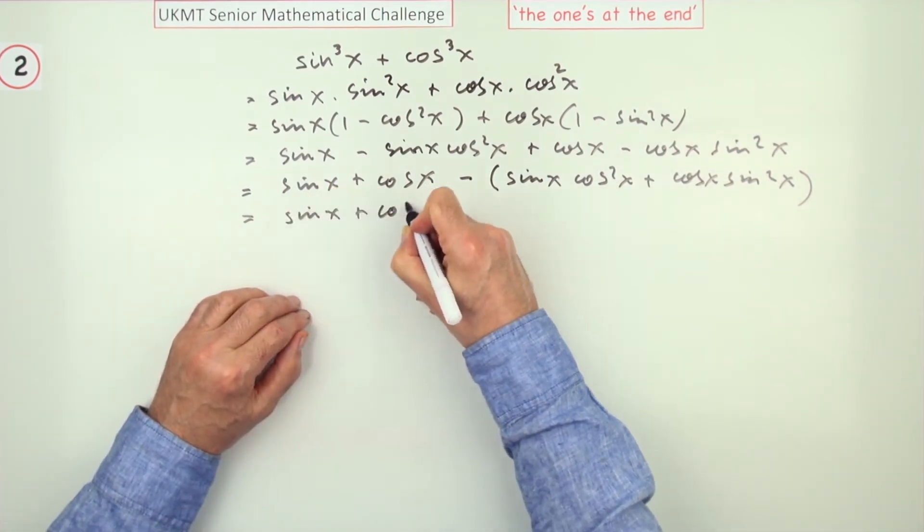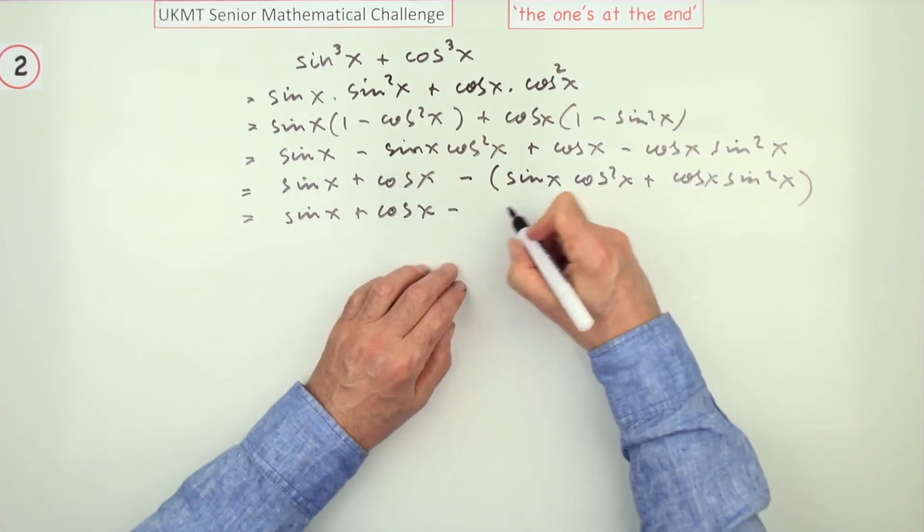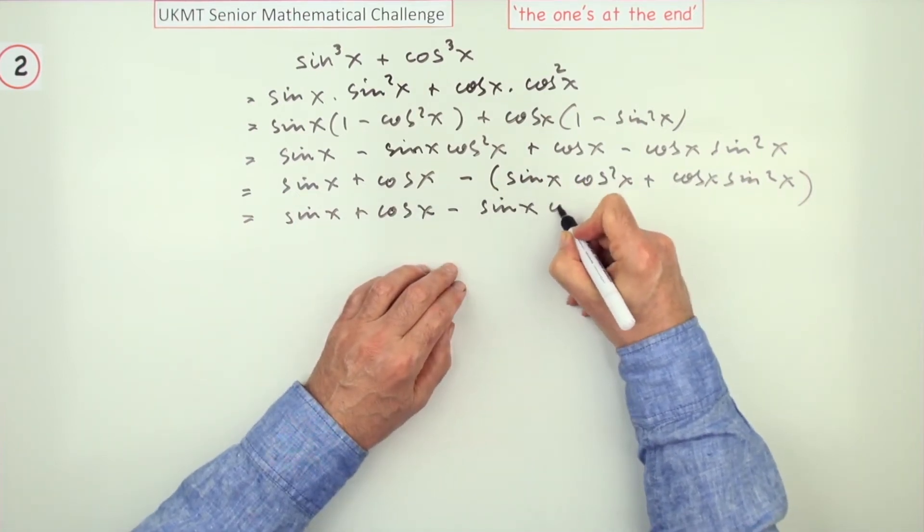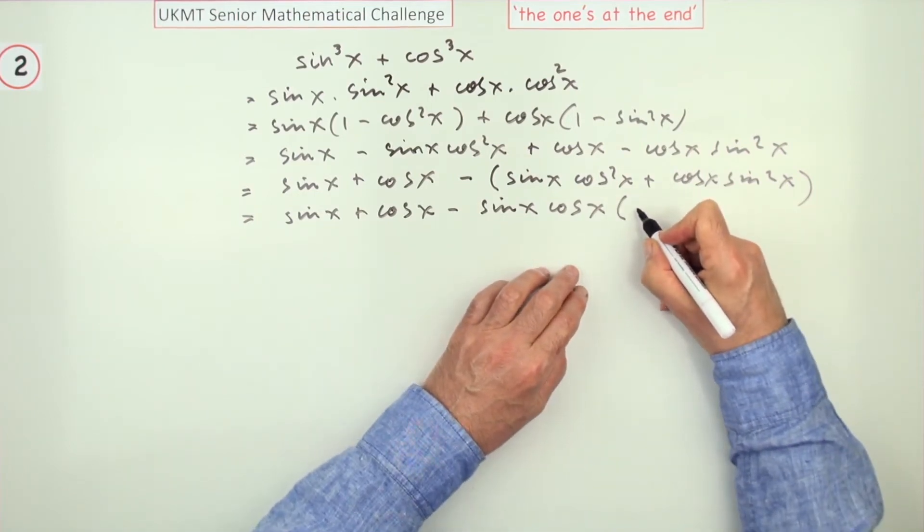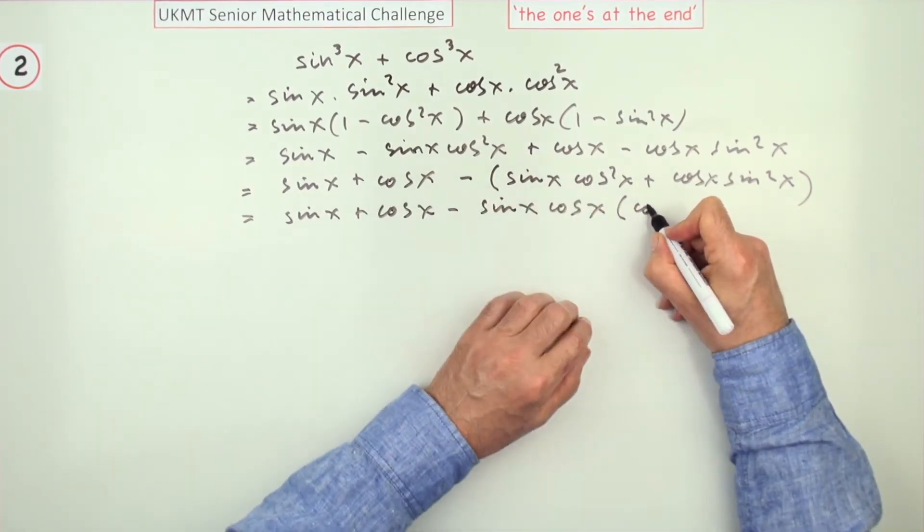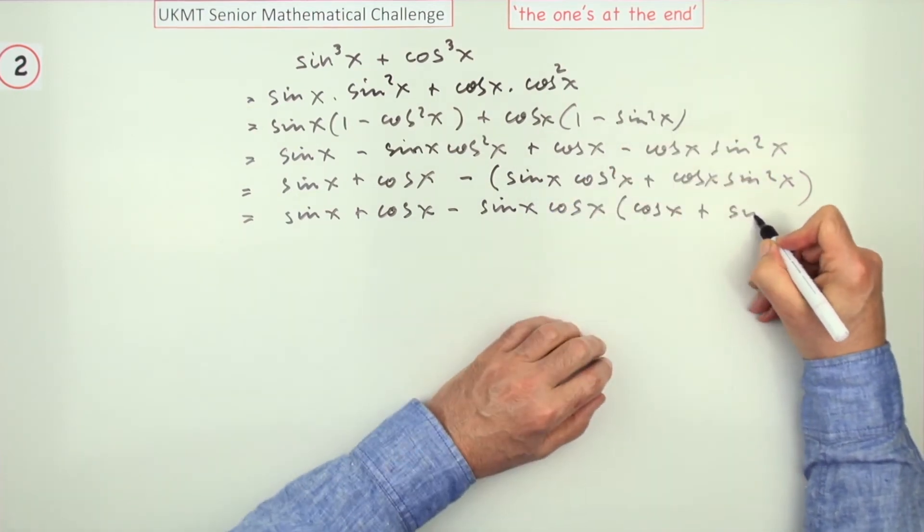So I've got sine x plus cos x minus and I can take that out as a factor: sine x cos x times, and that will just leave the cos x plus the sine x.